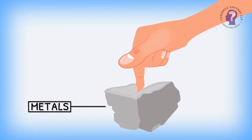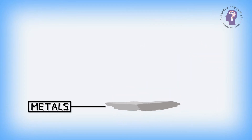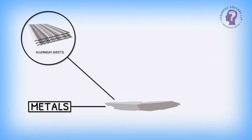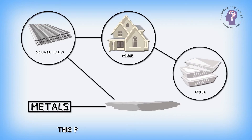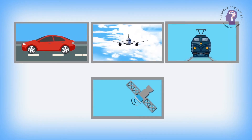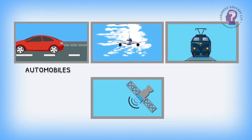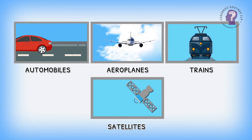Metals are generally hard and shiny or lustrous. Metals can be shaped by beating them into sheets, just like the aluminium sheets we use at home to wrap food. This property is known as malleability. Hence, they are used to make machinery, automobiles, aeroplanes, trains, satellites, etc.